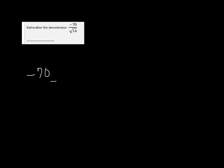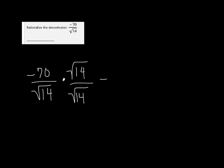Alright, I want to rationalize the denominator, so to do that, we need to multiply the top and the bottom by the radical, which is square root of 14. Because when we do that, the square root of 14 times the square root of 14 is just 14, so you've gotten that radical out of the denominator.